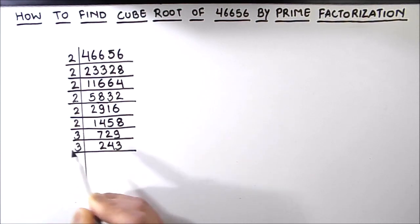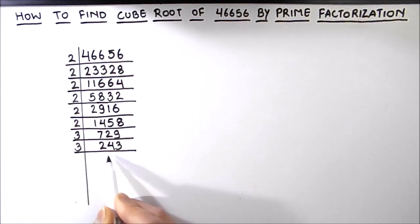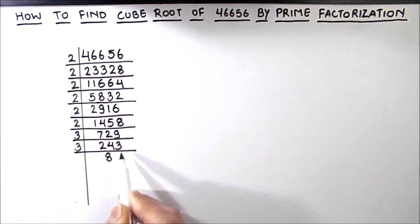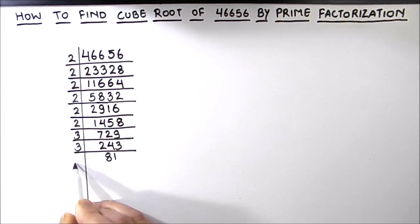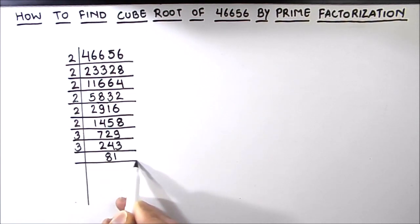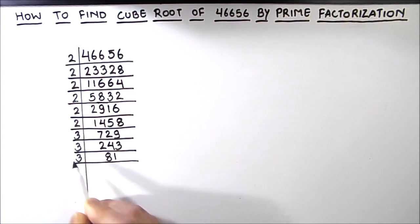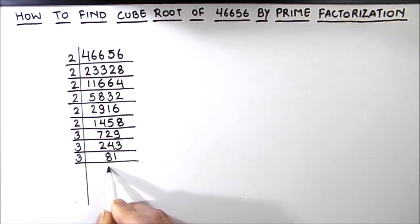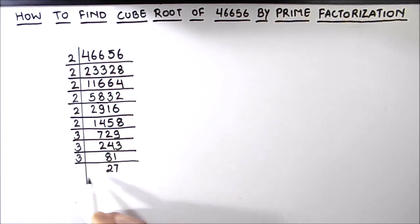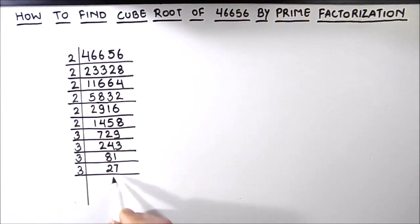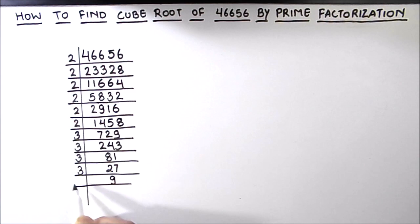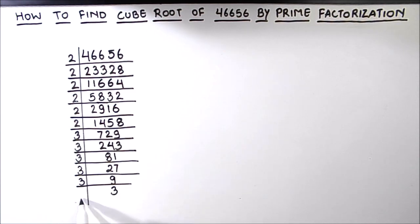Again we can use 3 as the divisor. 3 times 8 is 24 and 3 times 1 is 3. 81 is easily divisible by 3: 3 times 2 is 6 and 3 times 7 is 21. 27 can be divided by 3: 3 times 9 is 27. Then 3 times 3 is 9 and 3 times 1 is 3.